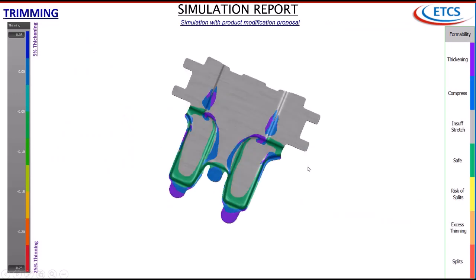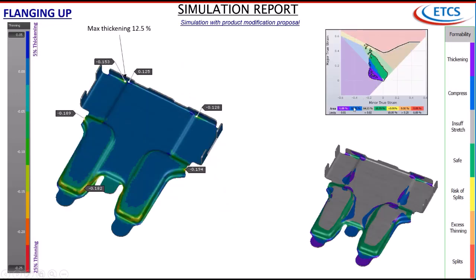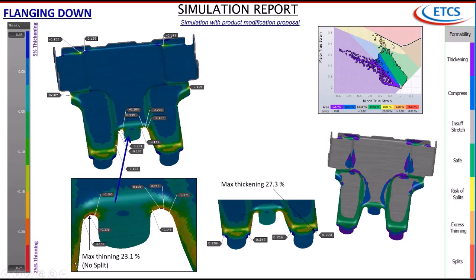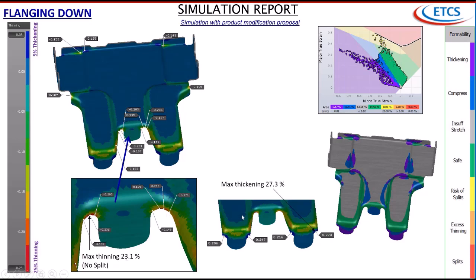This is the crash form FLD - we had a risk of split which we also controlled. After trimming, we did the flange up FLD. For the flange down, as you can see here, the risk of split increased but we don't have any actual split. Maximum thinning is 23.1% in that area, which is a minor risk of split and on the upper boundary, but we did some further changes on this.